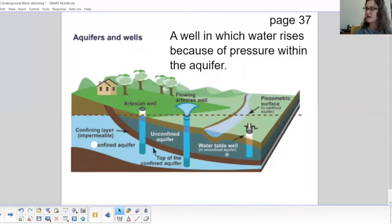And you can see again that diagram on page 37 in your textbooks. The well doesn't reach below the water table. The water is not going to be able to be obtained. So that well has to be deep enough to obtain the water from the aquifer below it.